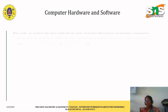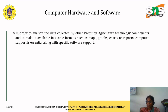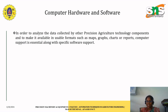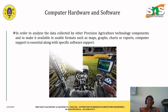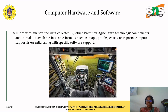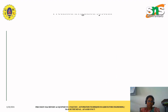The next topic is computer hardware and software. Whatever data has been collected so far needs to be analyzed with the help of software, hardware, and computers. Data collected by the various precision agriculture technology components will be made available in a usable format such as maps, graphs, charts, and reports. The computer is essential along with specific software support. The image here shows data being collected from the field and transferred to specific software within the computer hardware system.